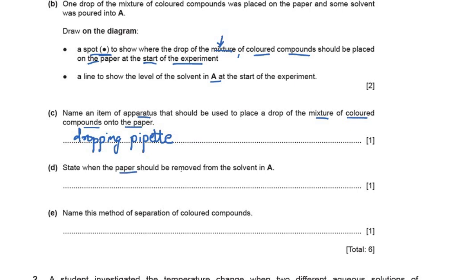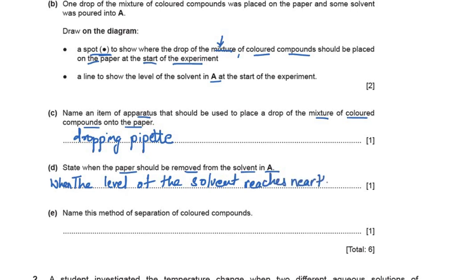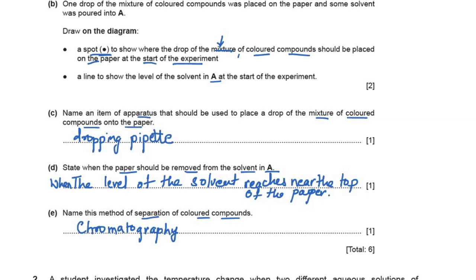State when the paper should be removed from the solvent. When we have started chromatography, when should we stop? When the level of the solvent reaches near the top of the paper — that is the answer. Name this method of separation of colored compounds: it is chromatography, or more specifically paper chromatography. Writing just 'chromatography' is also acceptable.